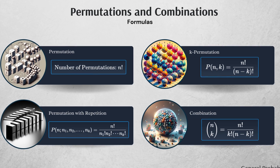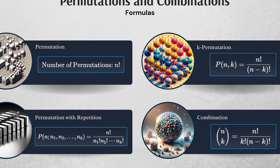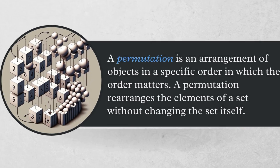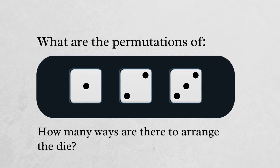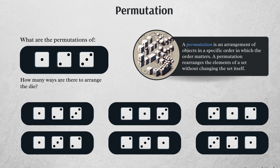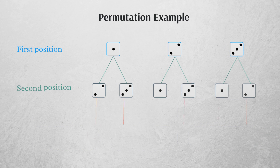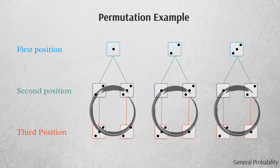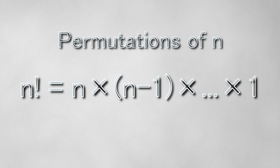Next we move on to combinatorics. As it relates to exam P, combinatorics is mainly focused on permutations and combinations. A permutation is an arrangement of items in which order does matter. So if we're asked what are the permutations of the dice rolls 1, 2, and 3, we can list out the different arrangements to see that there are six permutations. A methodical approach is to notice that there are three numbers you can put in the first position; after that is filled, there are two remaining numbers for the second position; and after the first two are filled, there's only one for the final position. So the number of ways to order this is 3 times 2 times 1, which equals 6. To generalize, for any set with n elements, there are n factorial possible permutations.